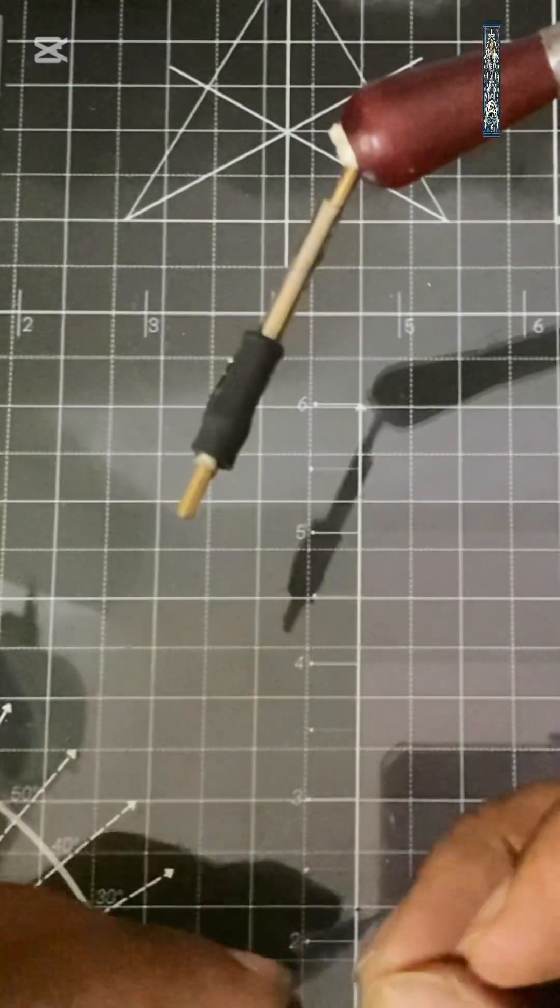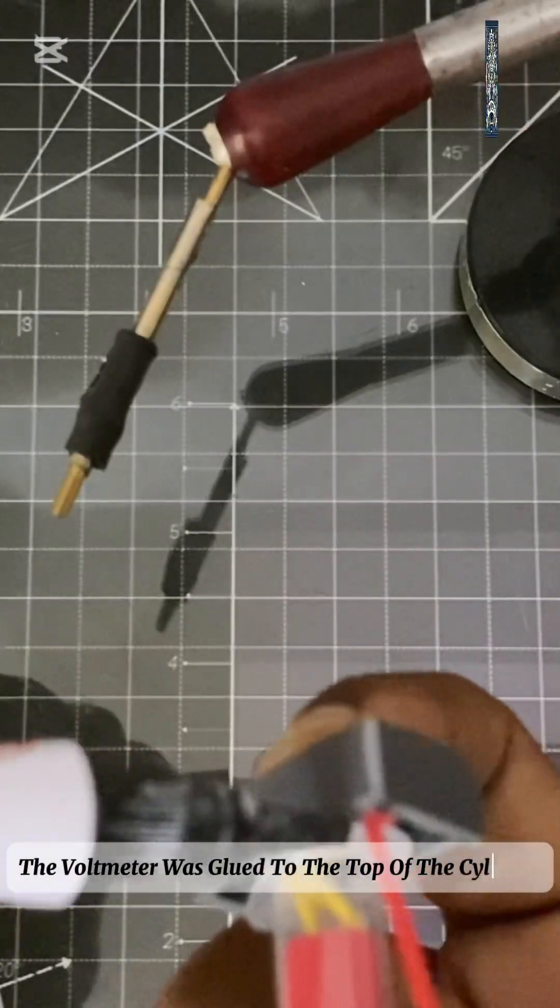The voltmeter was glued to the top of the cylinder.